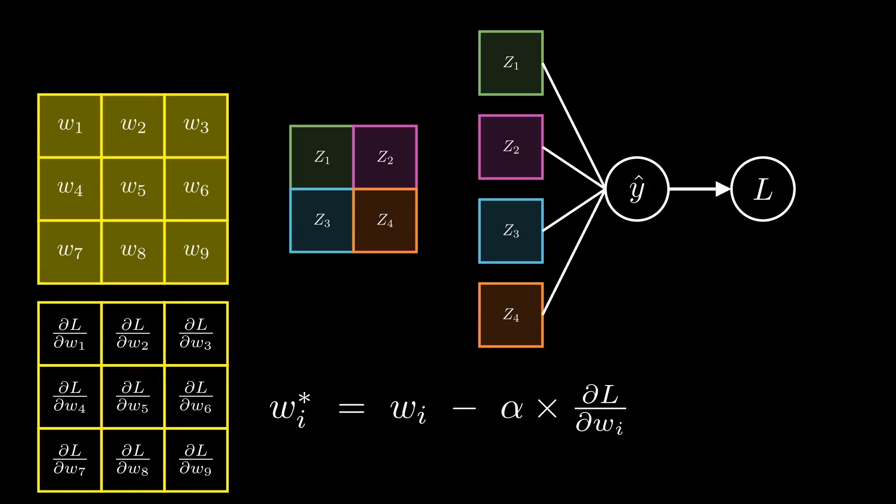The unknown in this formula is the partial derivative of the loss with respect to the weights. Since there are an equal number of weights as there are partial derivatives, we can represent this term the same way we represent the kernel — in matrix form. So, the next step is to calculate the partial derivative of the loss with respect to the weights.